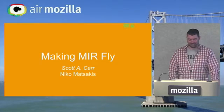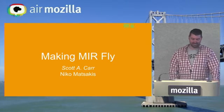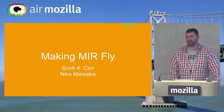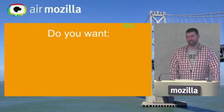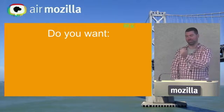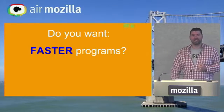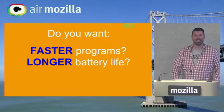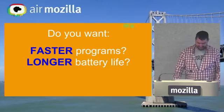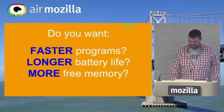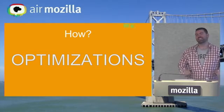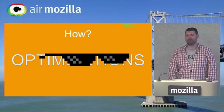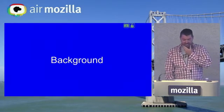Hi everybody, I'm Scott, my mentor is Nico, I'm from Purdue University, I'm a PhD student. My talk is on MIR optimizations — I work on the Rust compiler. This is the get-pumped-up slide: do you want faster programs? Do you want longer battery life? Do you want more free memory? We want all these things, and we're going to get them through compiler optimizations.